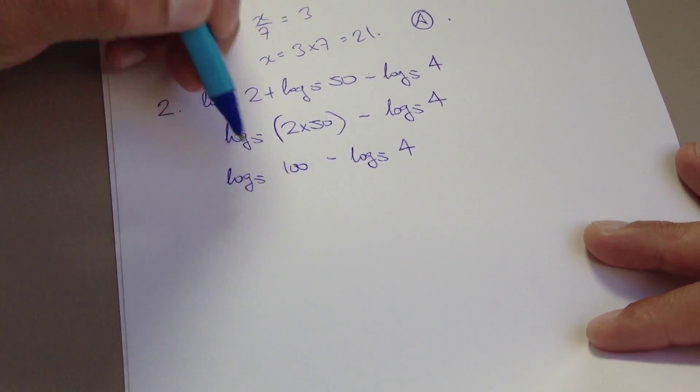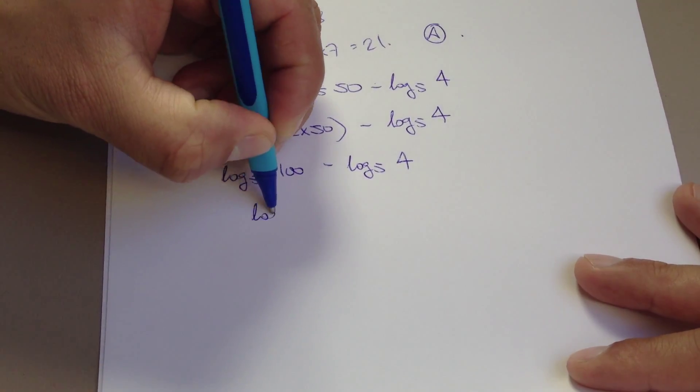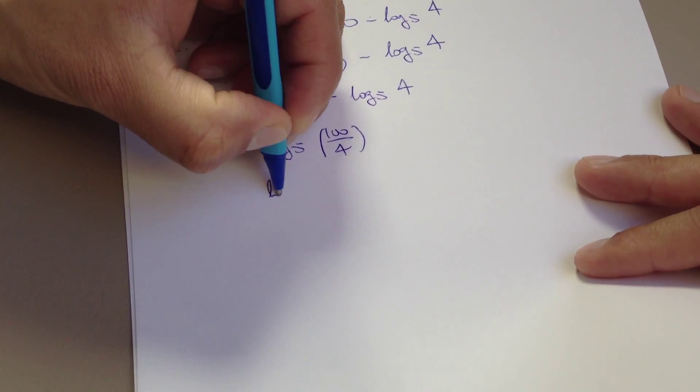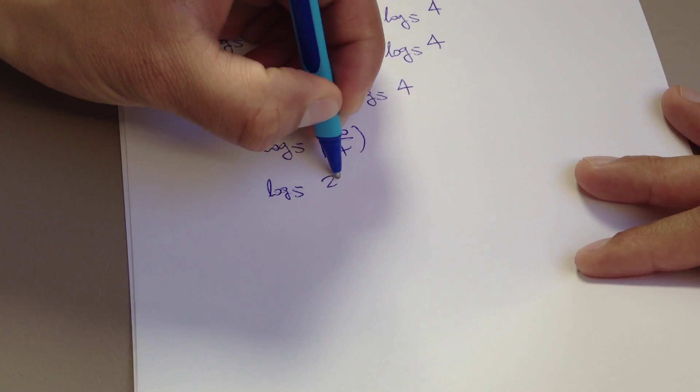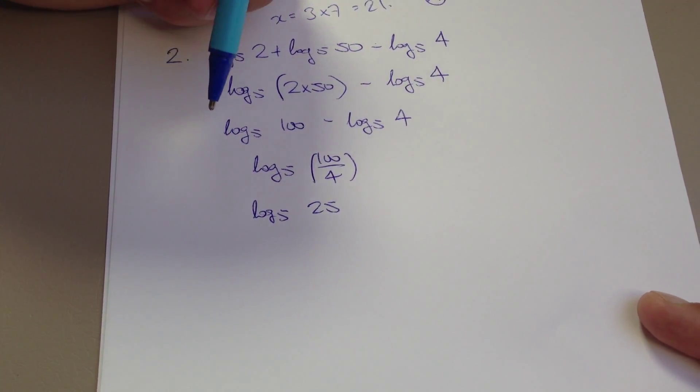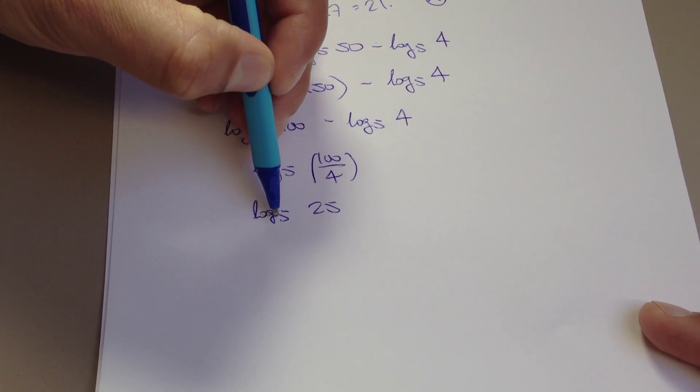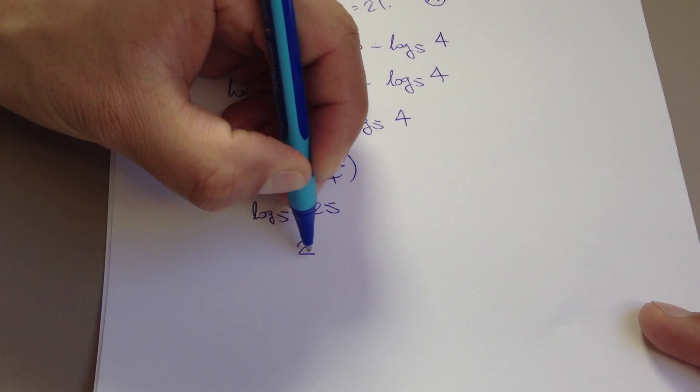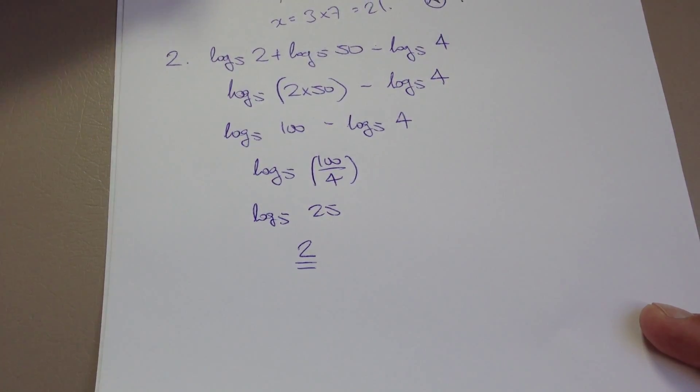And now we can use our rule there to simplify that. So that's just simply log to base 5 of 100 over 4, which is log to base 5 of 25. And log to base 5 of 25, you can pop that into your calculator, but it's effectively 5 to the power of what number will give me 25? And that's simply 2.